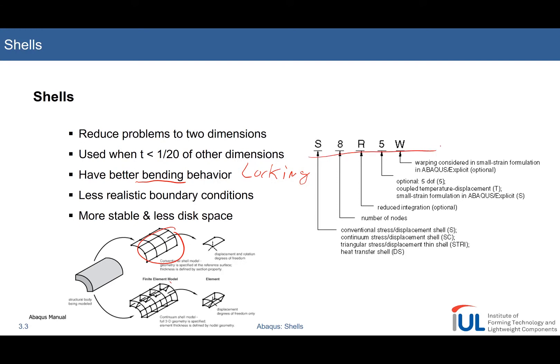On the right you can see some of the nomenclature, where the starting letter differentiates the type of shell element — this could include special things like heat transfer shells. You have the number of nodes, whether or not you go for reduced integration, the degrees of freedom, or whether it's temperature-displacement coupled. Warping is considered in small strain formulation as an option, and I hope you remember a little about warping from our beam tutorial.